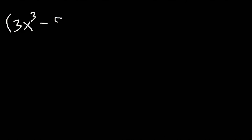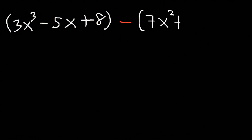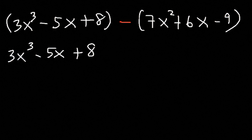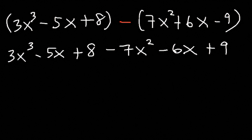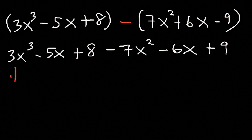Here's another problem: 3x cubed minus 5x plus 8 minus 7x squared plus 6x minus 9. Let's distribute the negative sign just like we did before. The first three terms remain the same, and then we'll have negative 7x squared minus 6x plus 9. Now let's combine like terms. There's no similar term to 3x cubed — there's only one x cubed term — so we're just going to bring it down and rewrite it.